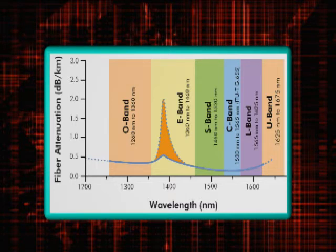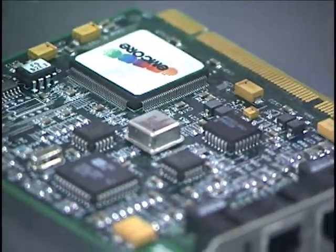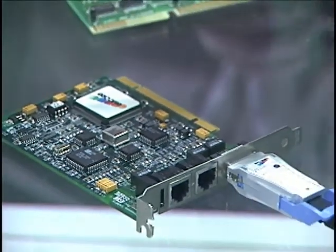And the U-band, or ultra band, spanning from 1625 to 1675 nanometers. A seventh band, not defined by the ITU, covers wavelengths near 850 nanometers.